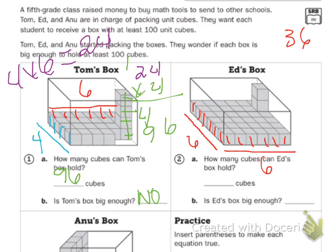And then, so, I have 1 layer plus 1, 2. So, 2 plus 1 is 3. So, you do the math here and figure out how many cubes and is Ed's box big enough.